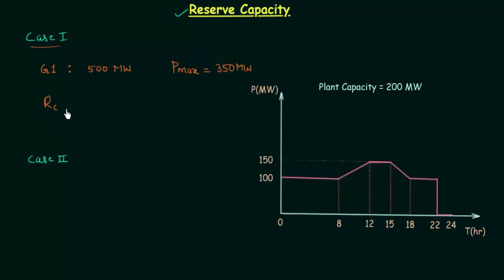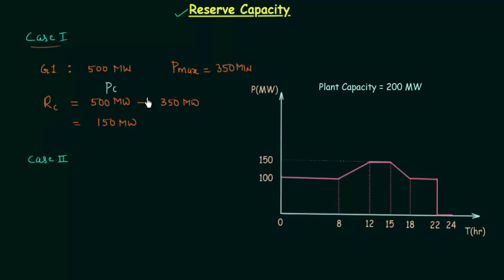Reserve capacity is simply equal to 500 MW, which is the plant capacity, minus 350 MW. When you solve it you will get 150 MW. So reserve capacity is equal to plant capacity PC minus the maximum power or the maximum demand. The formula is: RC = PC − Pmax.